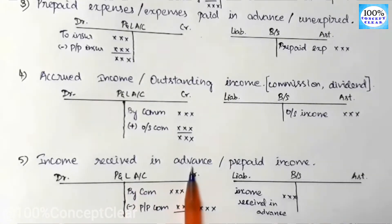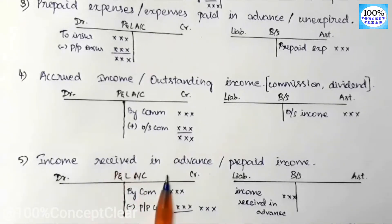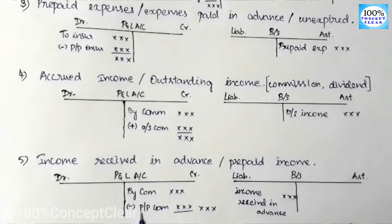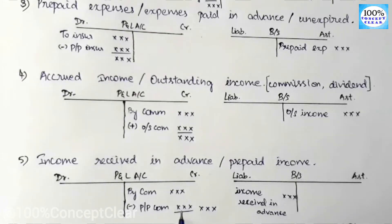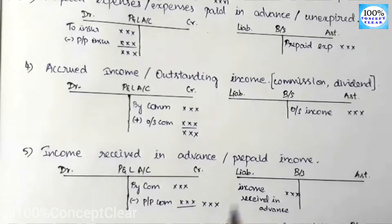The next adjustment is income received in advance, also called prepaid income. For example, if commission has been received in advance for the next month or period, this is prepaid income. In the P&L account, we minus the prepaid commission from the trial balance amount — we deduct the advance portion. The income received in advance appears on the balance sheet on the liability side, because we owe the service for next year.